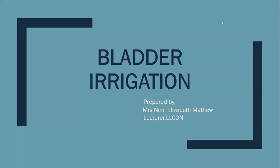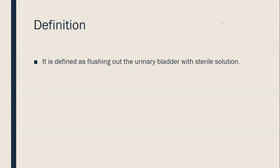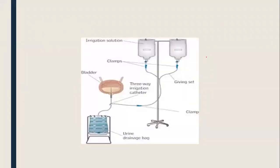Hi students, today let's discuss the procedure of bladder irrigation. We had already discussed eye irrigation, ear irrigation, and nasal irrigation. Now let's see more about irrigating the bladder. Bladder irrigation is defined as flushing out the urinary bladder with a sterile solution. It means washing out a body cavity using a stream of liquid, flushing out the urinary bladder to clear it.